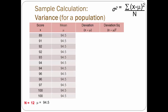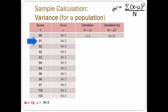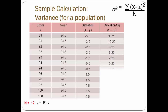Let's fill in the second column with the mean. Now, for each score, we subtract the mean from it to find out how much it deviates from the mean — to find deviation. So the first score of 89 minus the mean of 94.5 is negative 5.5. Our next step is to square the deviation, so negative 5.5 squared is 30.25 — deviation squared. We do this for the next score: 91 minus the mean of 94.5 is negative 3.5, which squared is 12.25. We have to do this for all 12 scores, both the deviation and the deviation squared.